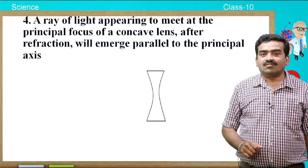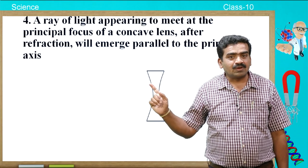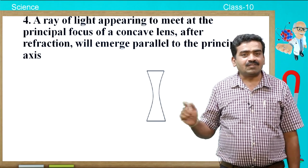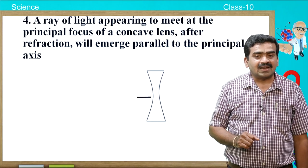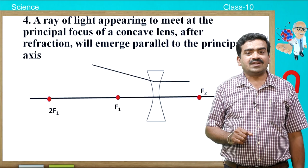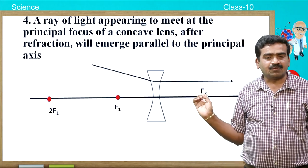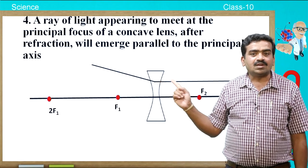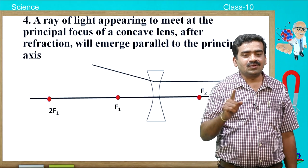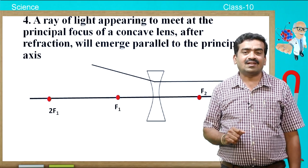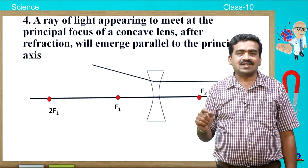The fourth property is: a ray of light appearing to meet at the principal focus of a concave lens, after refraction, will emerge parallel to the principal axis. So that means if a ray appears to be directed towards the principal focus, after refraction it moves parallel to the principal axis. This is very useful in drawing ray diagrams with respect to both concave and convex lenses.